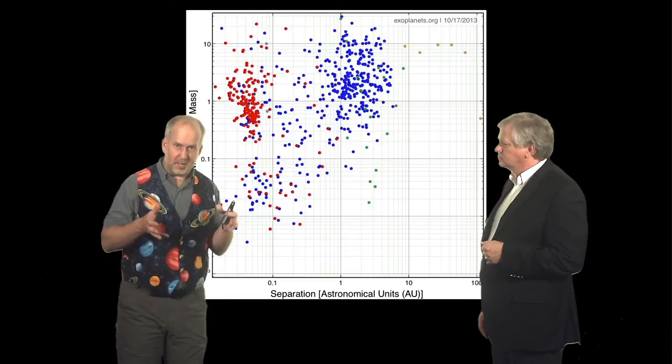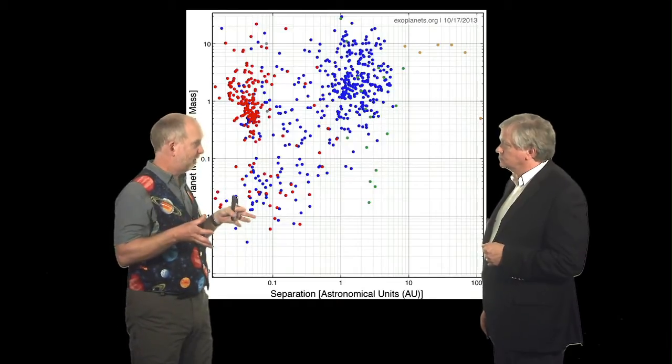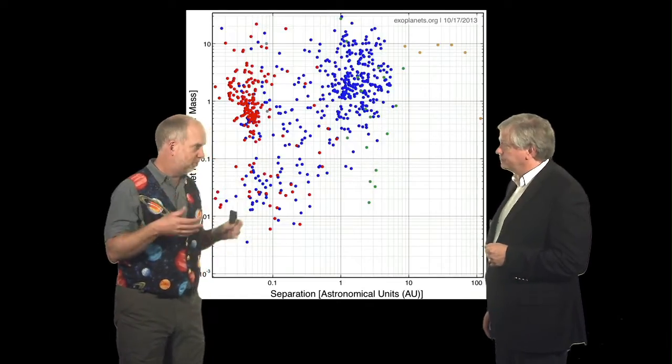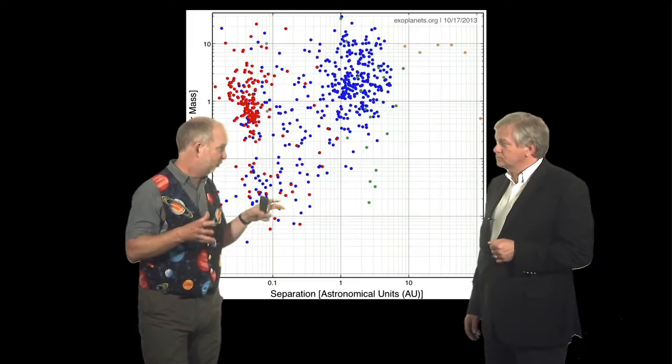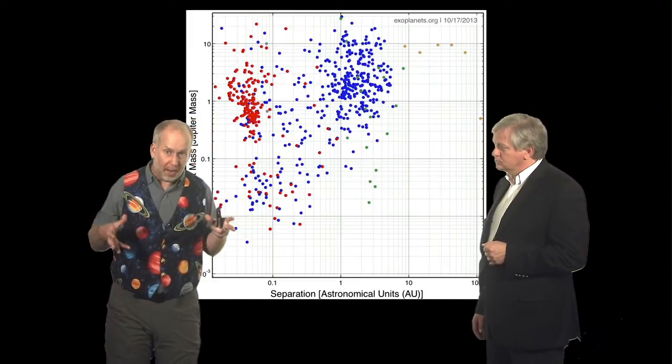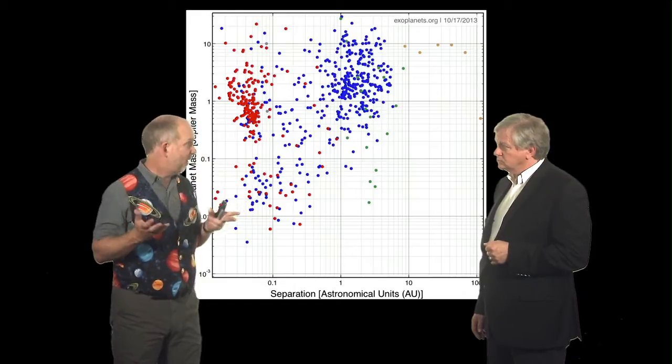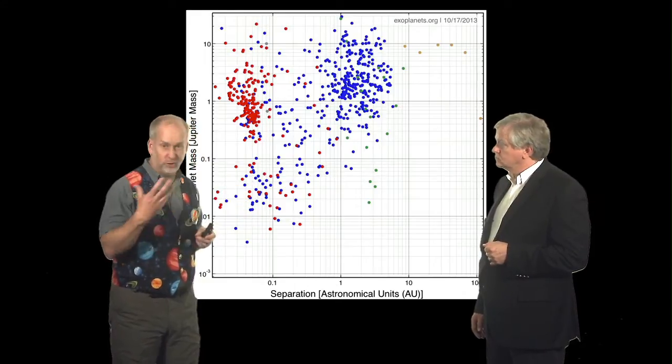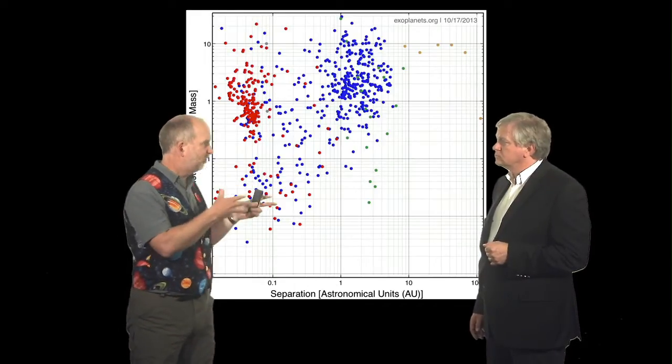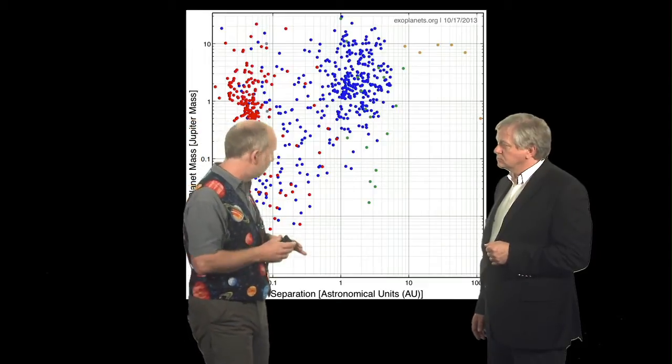However, basically about half of the high magnification events are followed up. The other half it's bad weather or they don't find them early enough or something like this. And of those half that are followed up, about half show planetary deviations. And half that don't could still have them, they're just too small or just fitting in the gaps of the data which wasn't very well sampled or something.